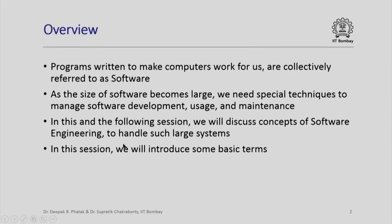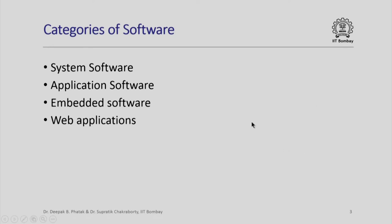In particular, in this session we shall look at some basic terms, particularly the categorization of software for different purposes. Very broadly, software is categorized into 4 different categories: system software, application software, embedded software — which is essentially application software embedded into gadgets and appliances with special features — and last but not least, web applications, which abound these days.